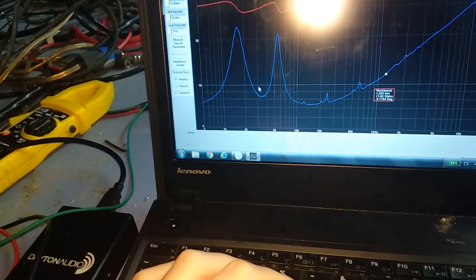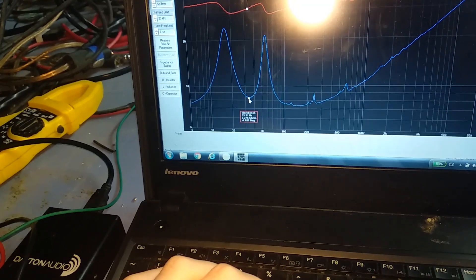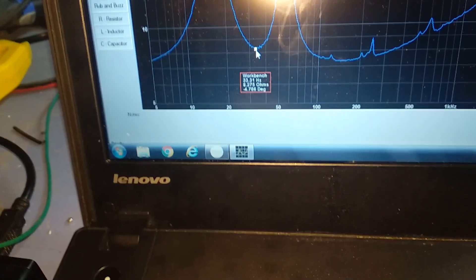Hear that? Just did an impedance sweep. And now for a ported speaker enclosure the tuning frequency is the lowest part of this dip right here which is 33.3 Hertz.